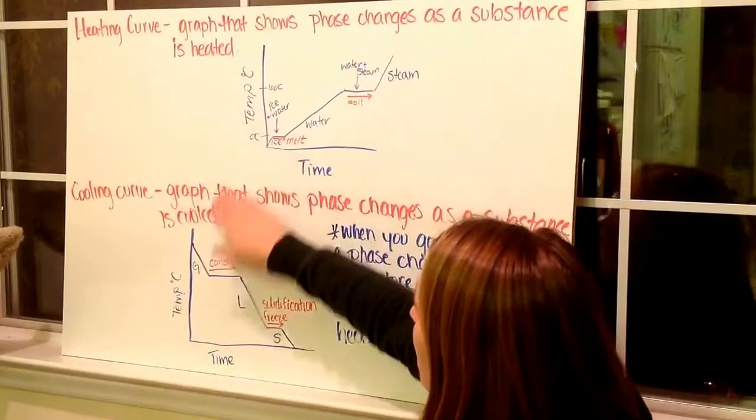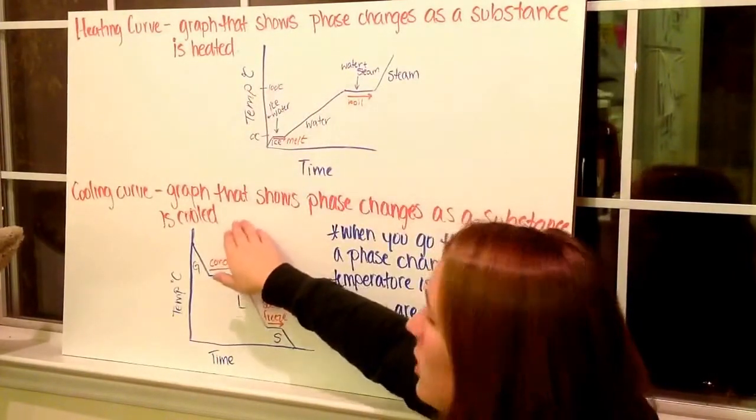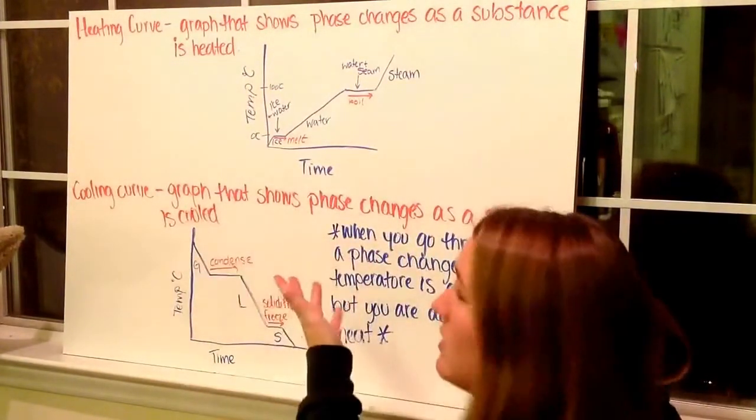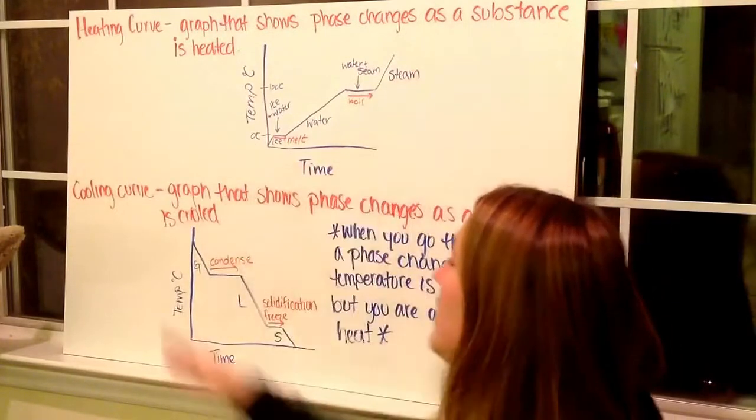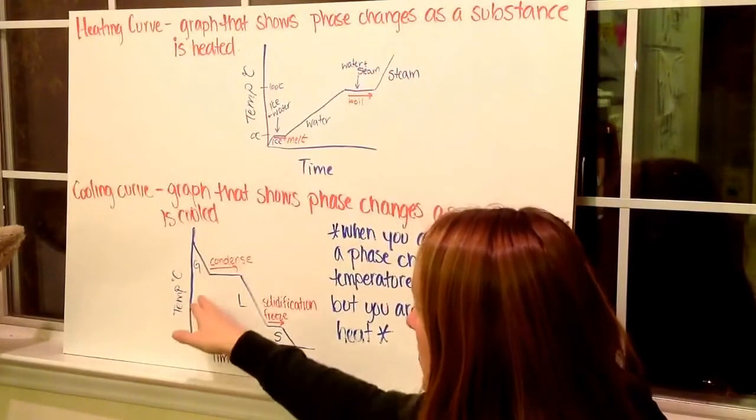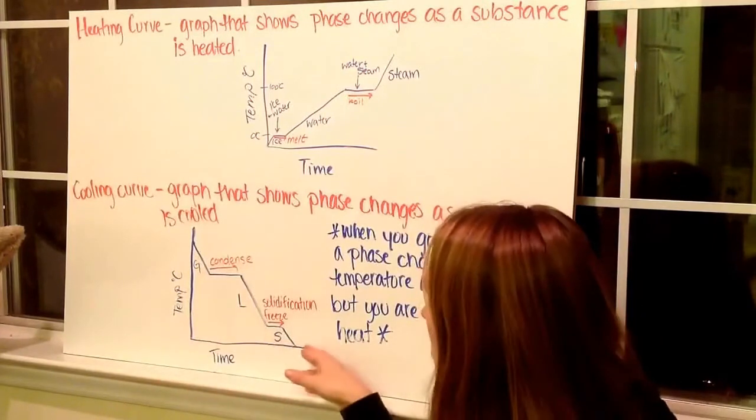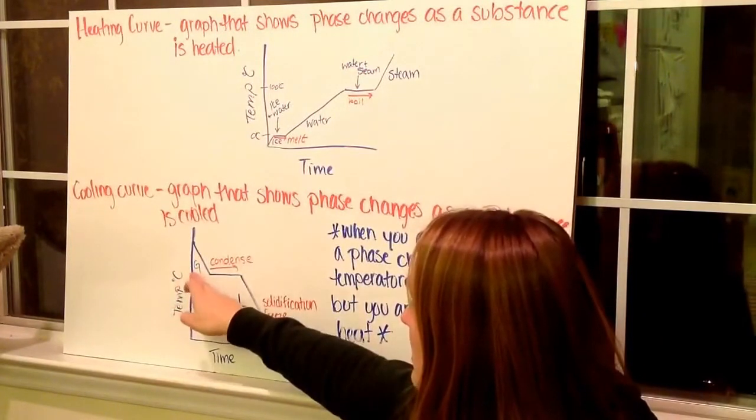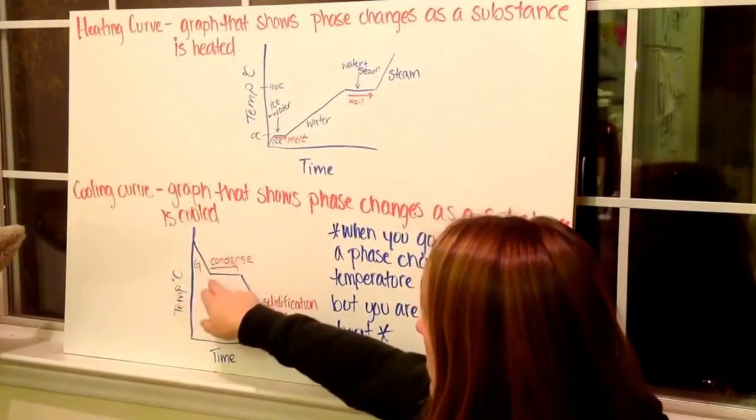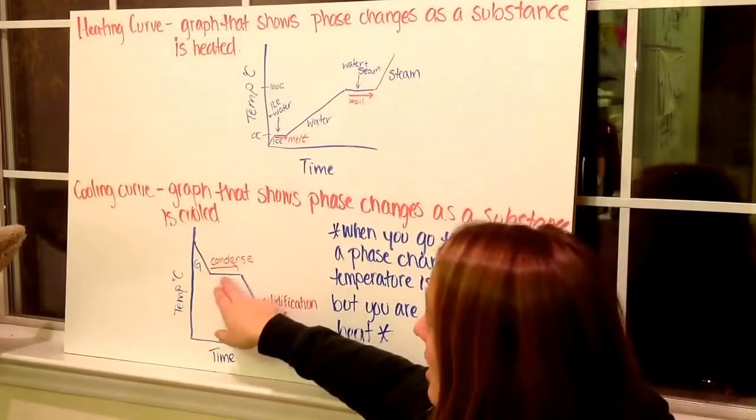After the heating curve, we have the cooling curve. Our cooling curve is a graph that shows the phase changes as the substance is cooled. So just the opposite of the heating curve. A heating curve goes up, a cooling curve comes down. So again, we have temperature and time. The temperature, we're starting at a high temperature down to low. We're starting again at zero seconds and moving along. Temperature, we start as a gas, so a very high temperature. It starts as a gas, drops down. Then we hit our line, our flat line. The plateau tells us that we have a phase change.